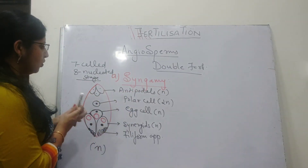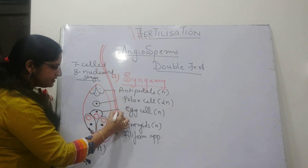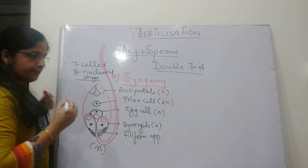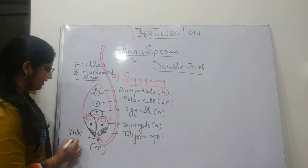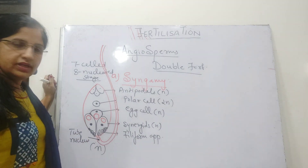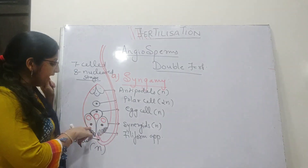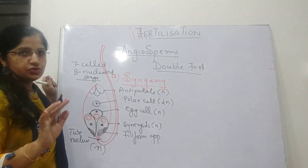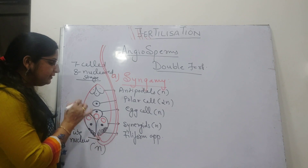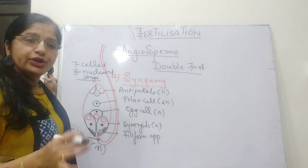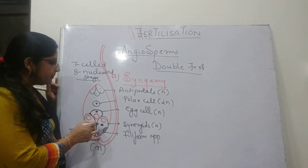When the pollen tube is germinating and approaching, the synergid will guide the pollen tube to enter into the embryo sac. The tube nucleus, at the front of the pollen tube, undergoes fusion with the nucleus of one of the synergids — either one. As soon as the tube nucleus fuses with the synergid nucleus, that synergid degenerates.